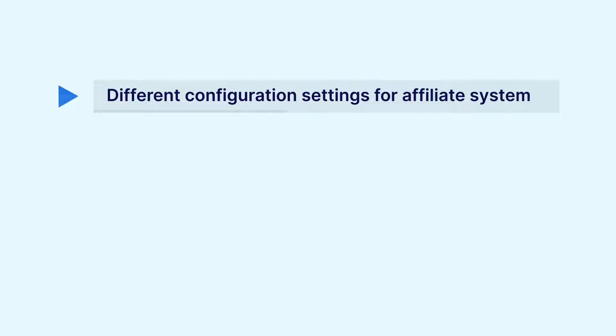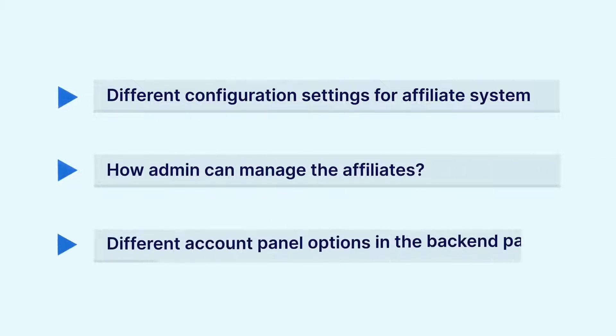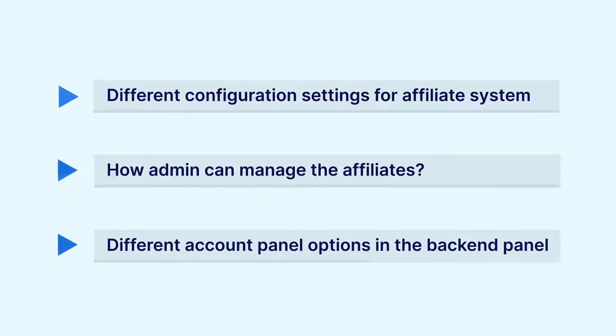In the previous video, we showed you how a particular user would be able to register himself as an affiliate at the Buggesto webstore frontend, and the different account panel options that the affiliate user gets. So in today's video tutorial, we'll be checking out the admin workflow and the different configuration settings required for the affiliate system, as well as how the admin manages affiliates in the admin backend panel.